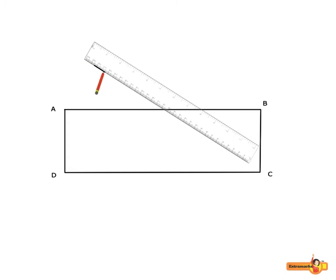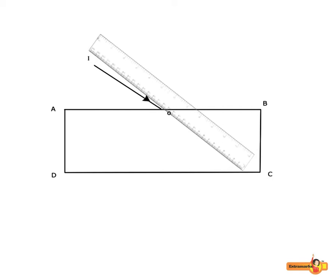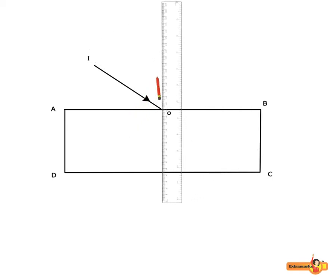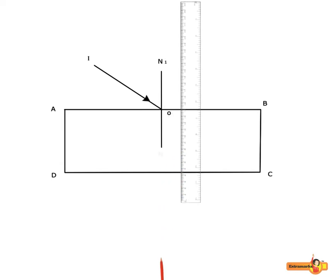Draw a line I, O to represent the incident ray. Draw the normal N1, N2 at the point of incidence O. Fix two pins on the incident ray I, O.